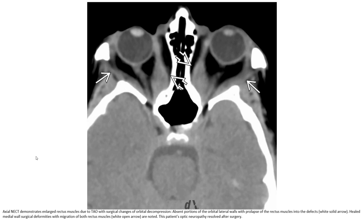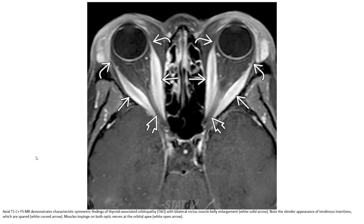Here, post-surgical deformity is noted with migration of both rectus muscles. This patient has optic nerve compromise as a result of the disease. On MRI, there are characteristic symmetric findings of thyroid-associated orbitopathy with bilateral rectus muscle belly enlargement, with the slender pattern of tendon insertion spared, and mass effect on both optic nerves and the orbital apex.